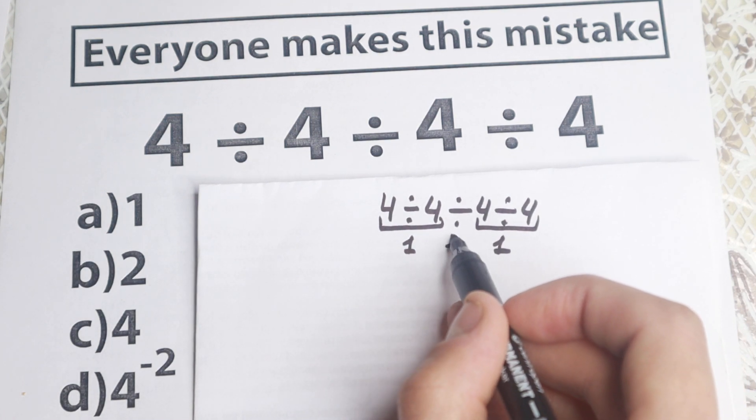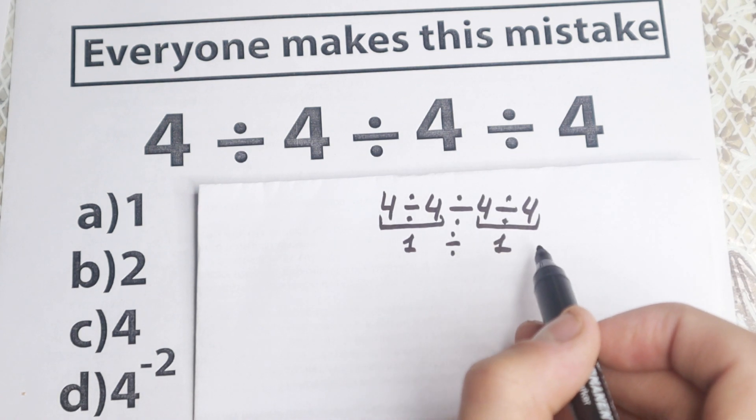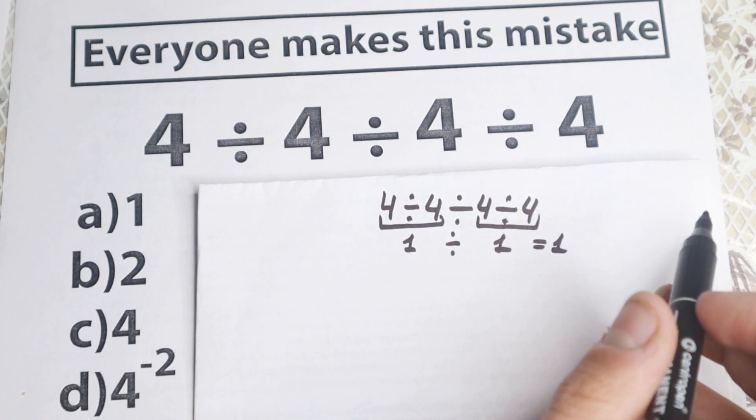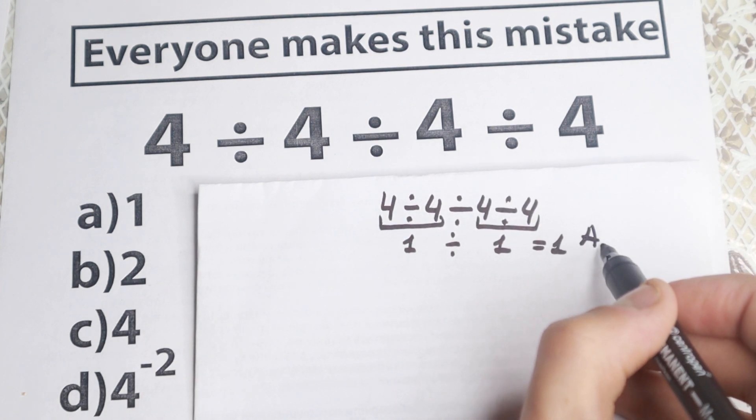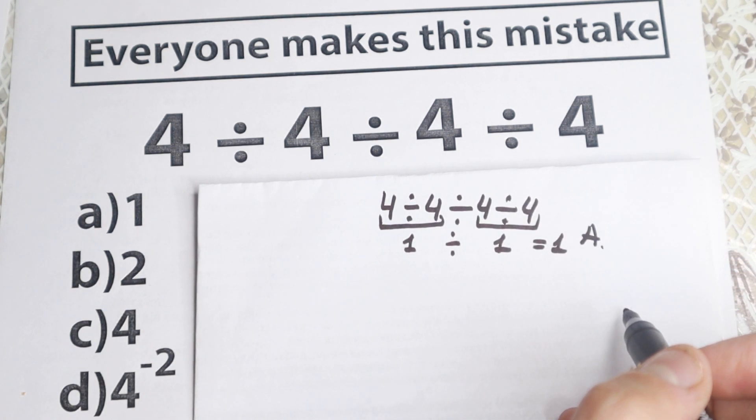And they still have one division sign. So 1 divided by 1 equals 1. And a lot of students make this common mistake. They say, okay, the answer is A.